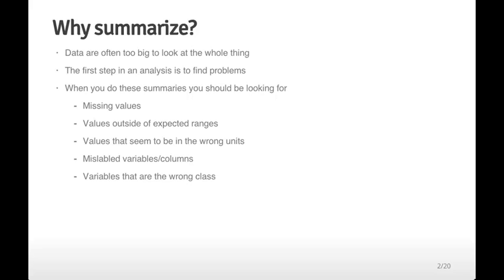You might look for values that seem to be in the wrong units, so if most of the measurements are in Celsius and one measurement is in Fahrenheit. You also want to look for mislabeled variables or columns, and variables that are the wrong class — variables that look like they should be quantitative but are actually labeled as character variables and so forth. This overview covers the basic and most useful ways to summarize data; for other approaches, search on Google for the specific data type.